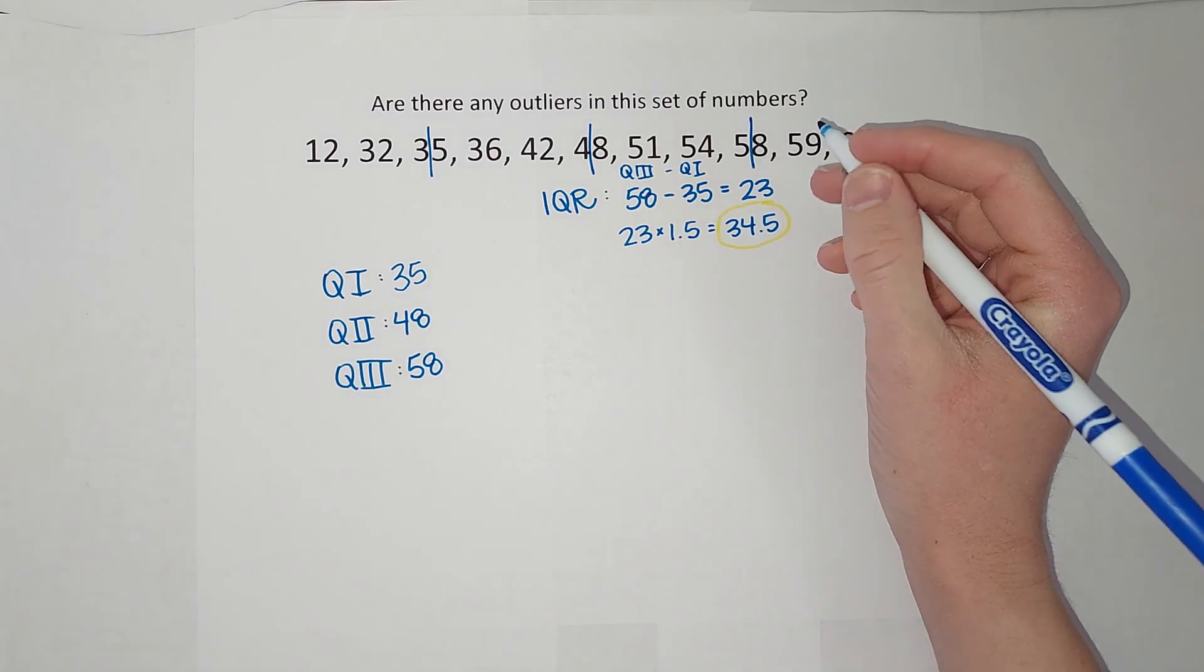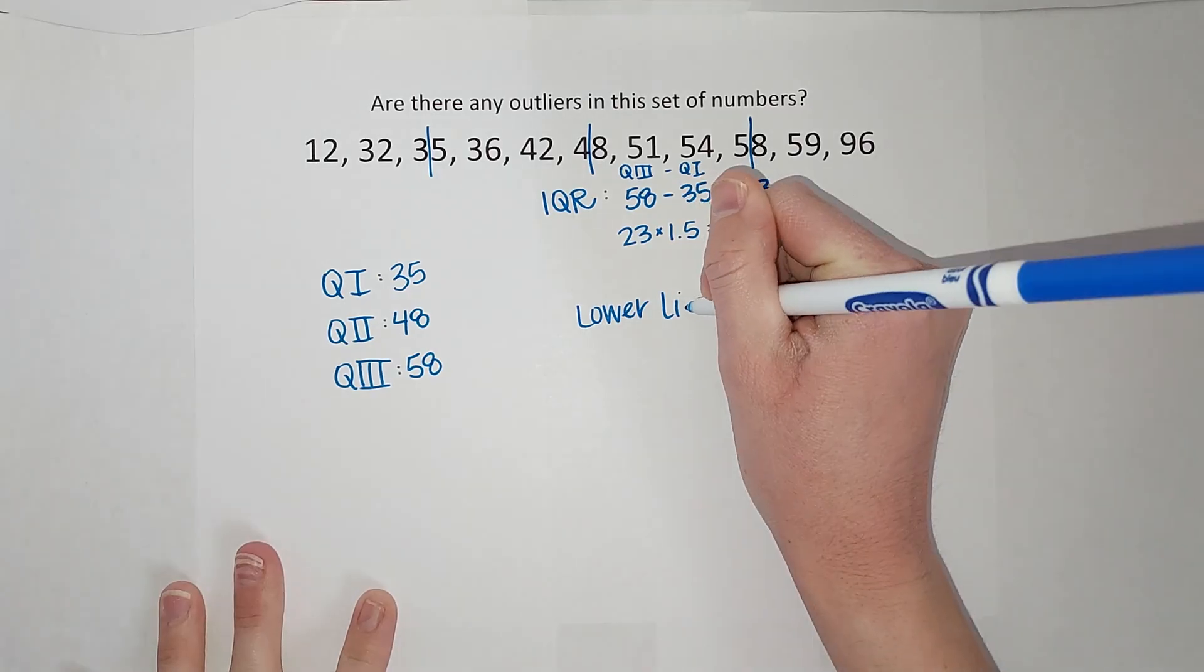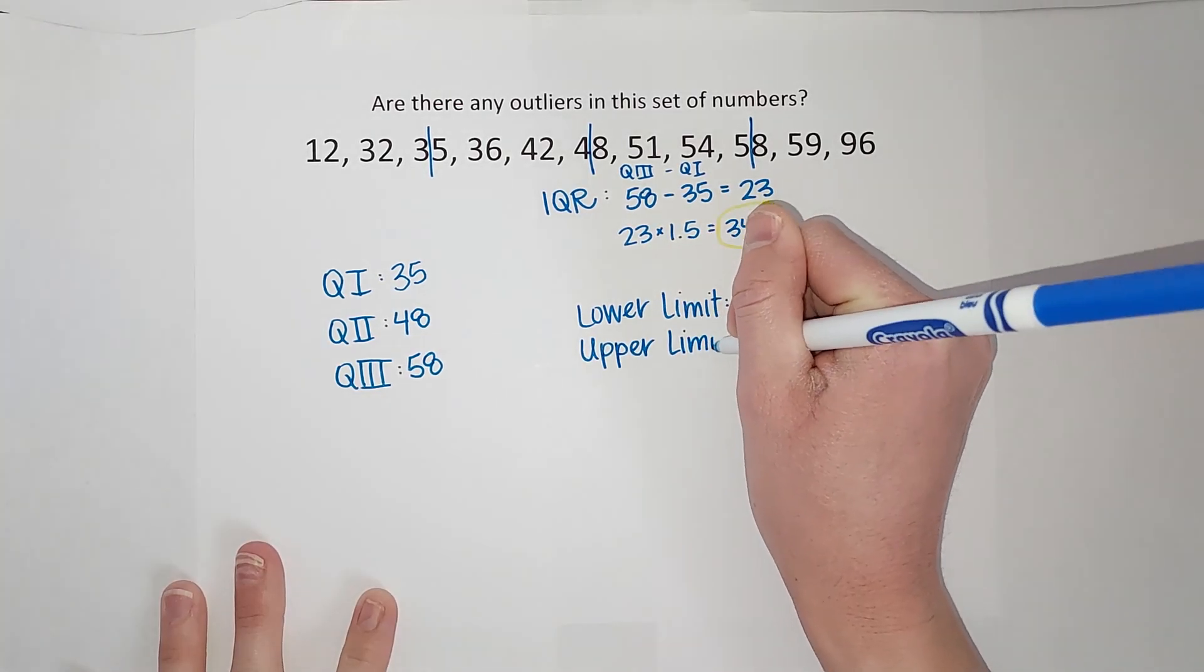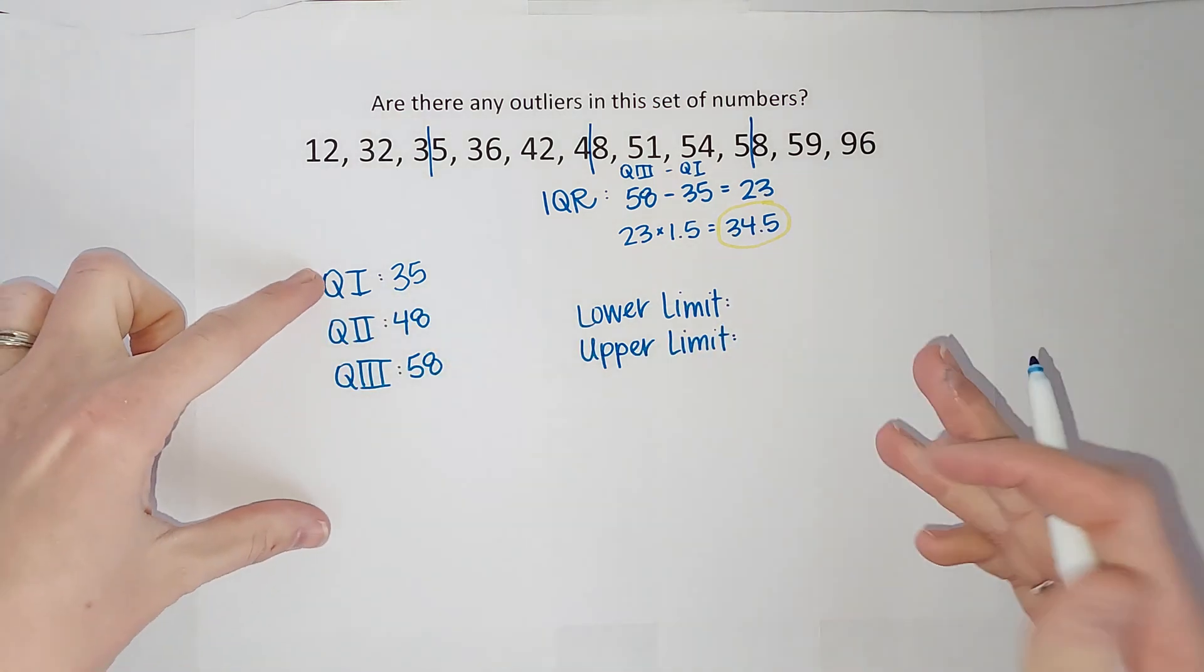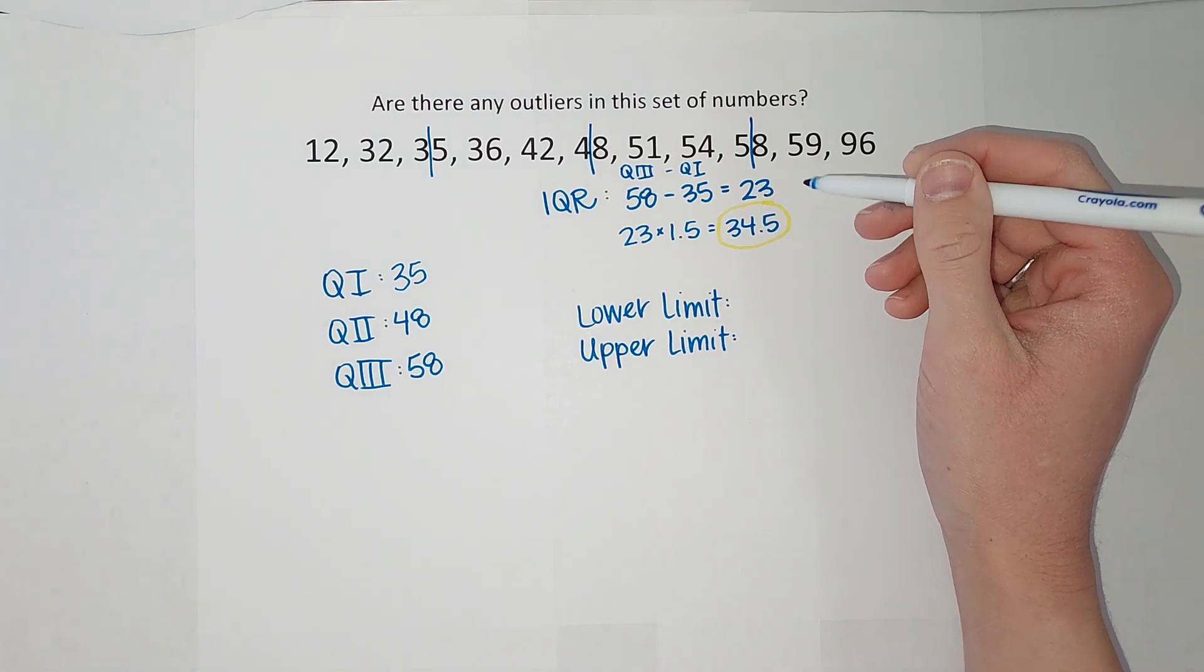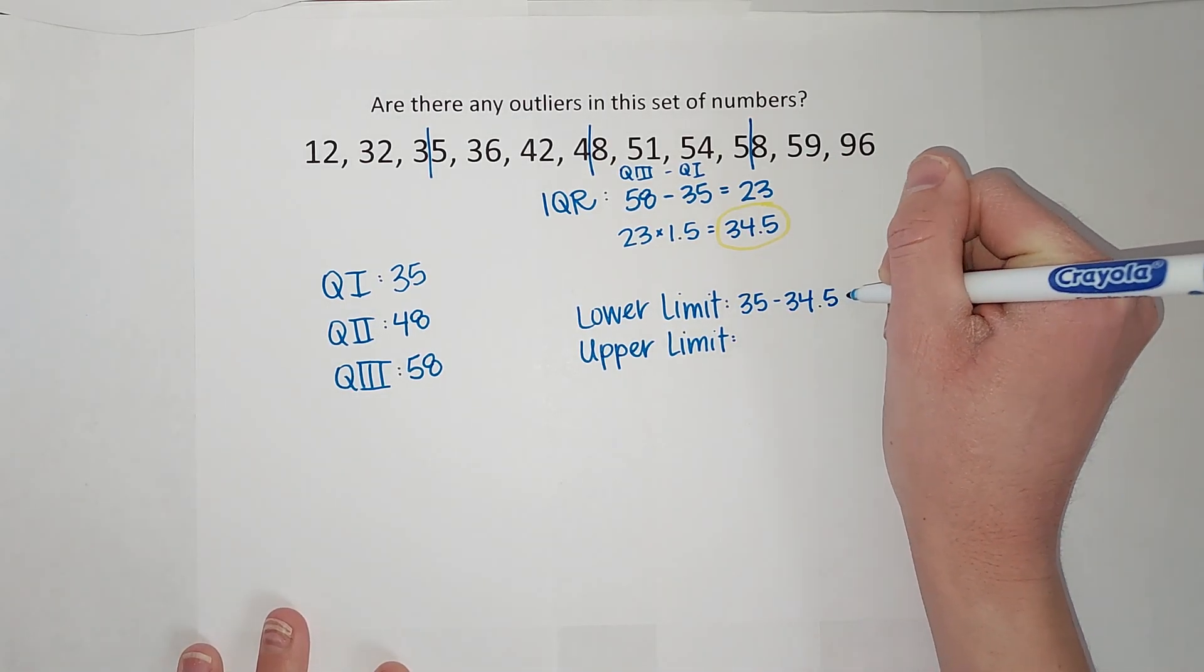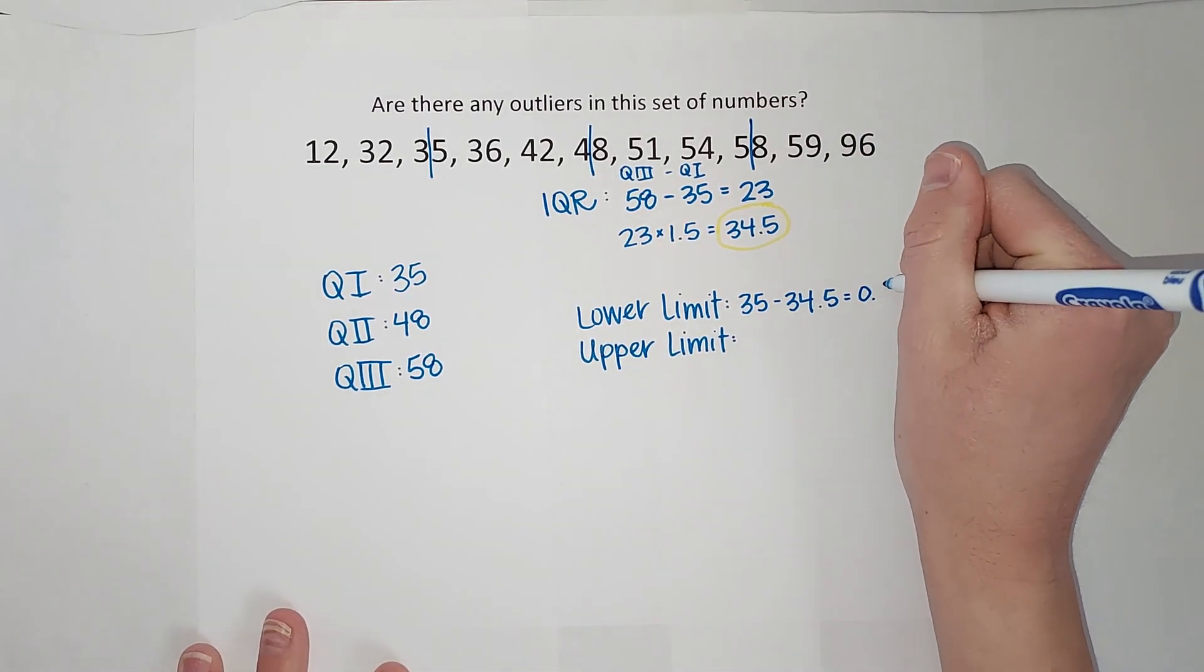So now we are going to find what we call our lower limit. To find my lower limit, I take quartile 1 and subtract this number, which I wish had a special name, the IQR times 1.5. So we're going to take 35 and subtract 34.5, which leaves me with 0.5.